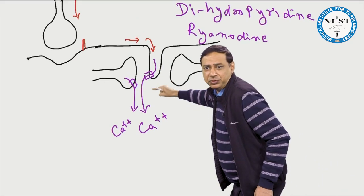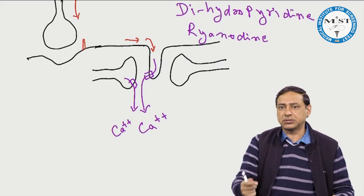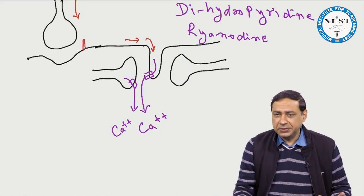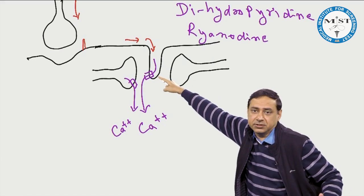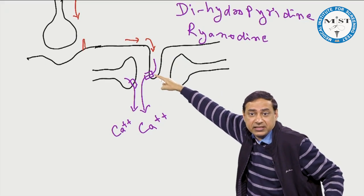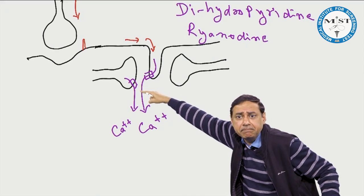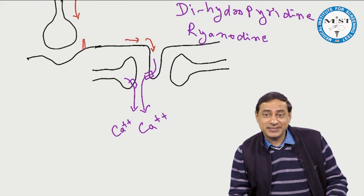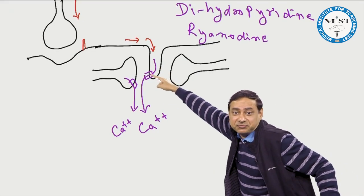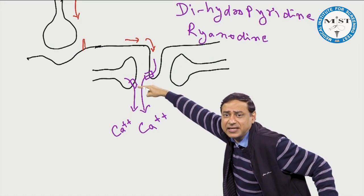Not only does calcium come from the T-tubule, but calcium also comes from the cistern — and this cistern calcium is actually the real calcium causing muscle contraction. How is the ryanodine receptor activated? The dihydropyridine receptor is voltage-gated and activated by the action potential voltage. But who opens the gate of the ryanodine receptor — is it voltage-gated, calcium-gated, or something else?